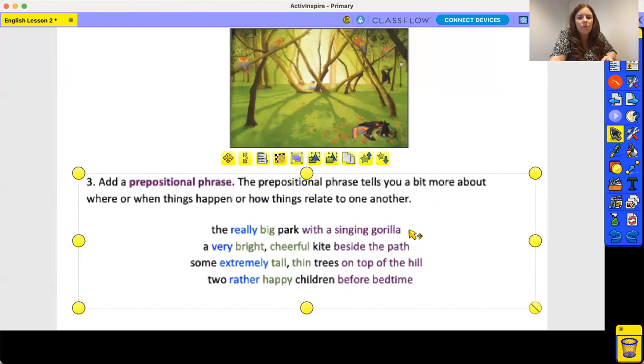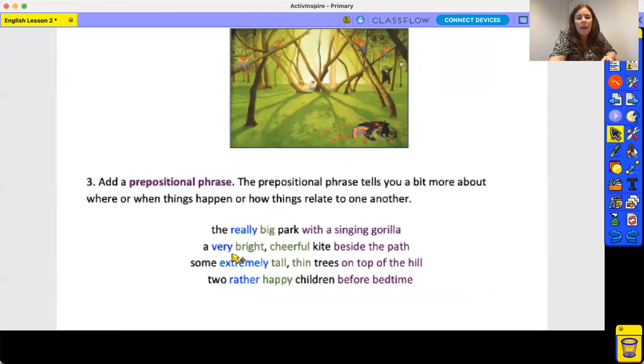The really big park with a singing gorilla. So we're talking about the park with a singing gorilla—it's giving us a bit more detail to it. A very bright, cheerful kite beside the path. It's giving us a bit of detail where it is—it's beside the path. Some extremely tall, thin trees on top of the hill. This bit here doesn't really matter if we have it or not, but it adds so much more to a phrase and then to a sentence.